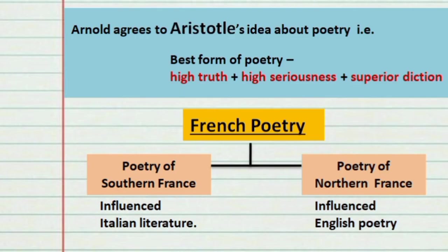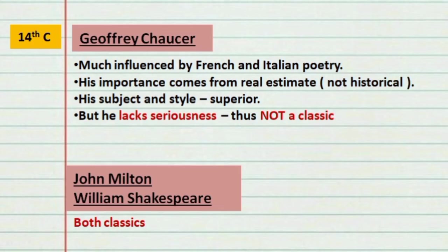Before classifying writers, Arnold talks about French poetry. French poetry is important because it has a huge influence on English poetry — the poetry of southern France influenced Italian literature, while northern France influenced English literature. However, Arnold doesn't appreciate French poetry because he thinks it is only important from a historical point of view. It lacked the kind of seriousness, diction, or truth that Arnold expects from poetry.